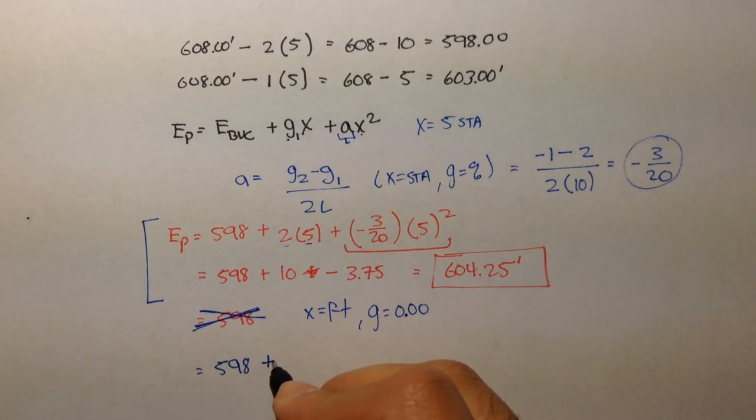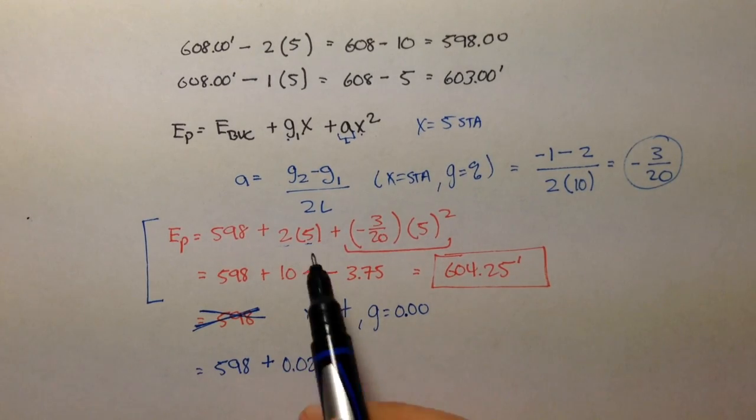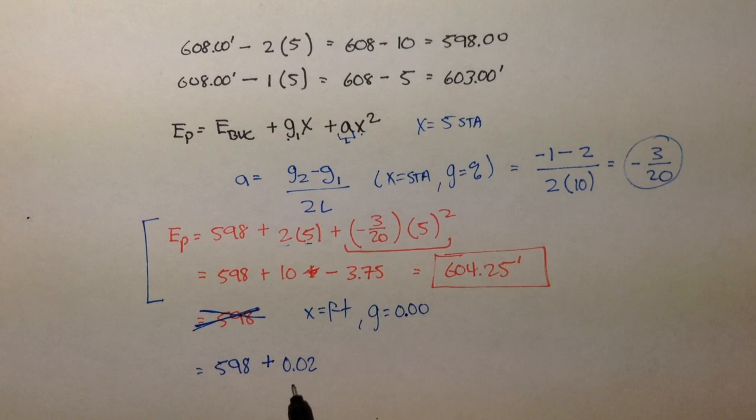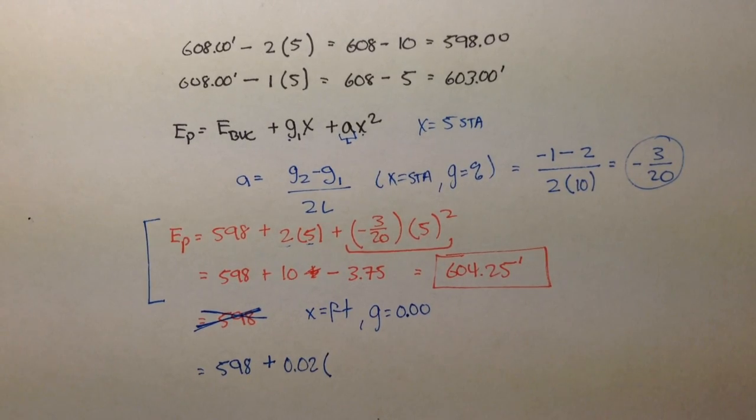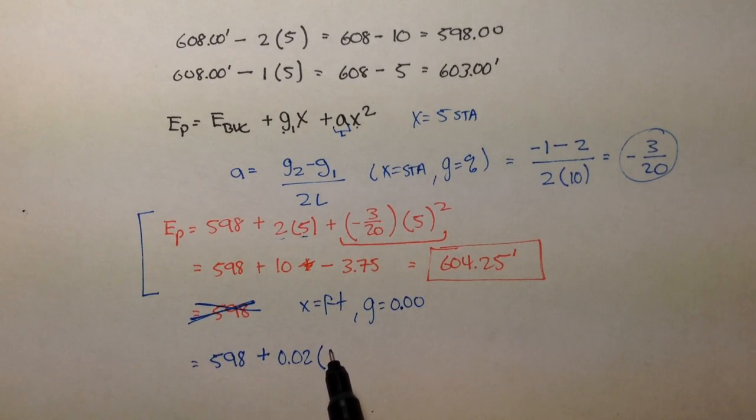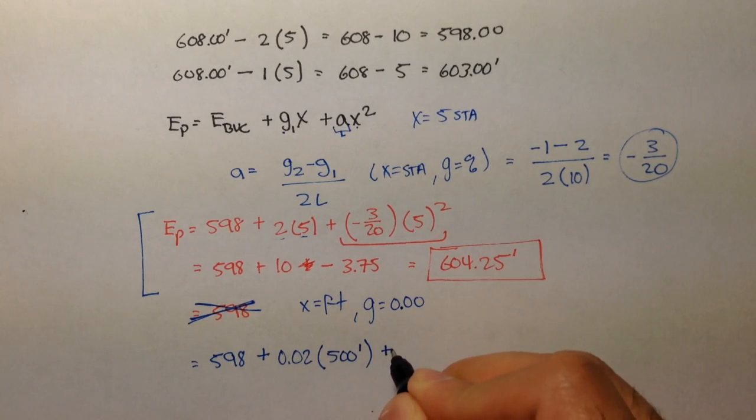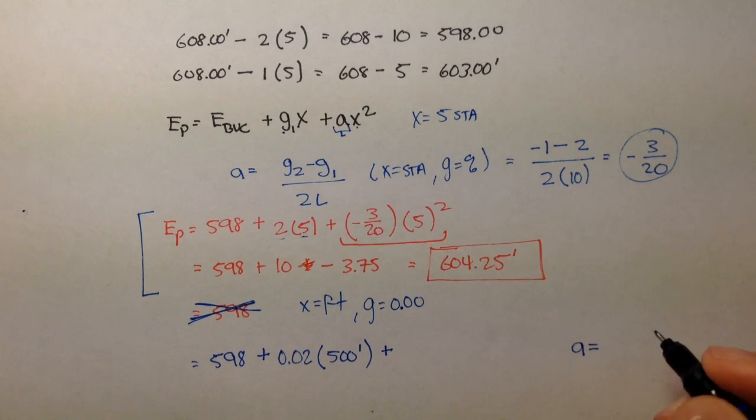Let's plug it in as X is in feet, and the grade is in decimal form. We still have the 598. That doesn't change. That's your elevation. Plus, 0.02, right? 2% divided by 100 gives you 0.02. That's its decimal form. X from stations to feet, you would simply multiply X by 100. So, our X was 5 stations, or 500 feet.